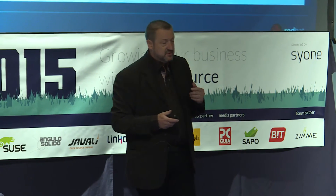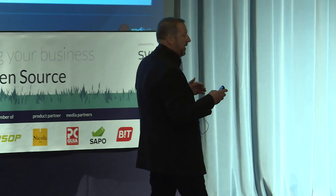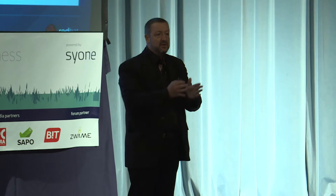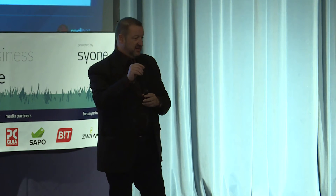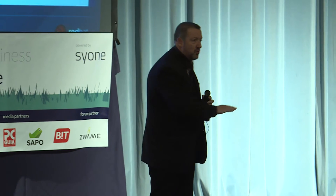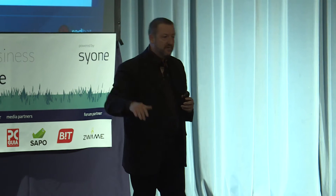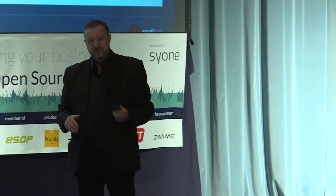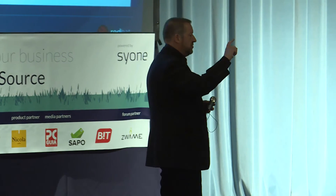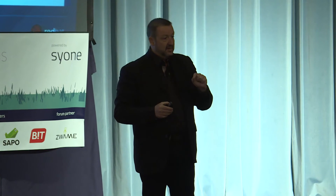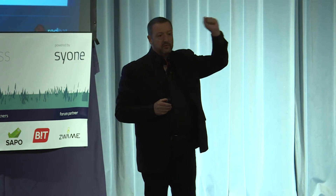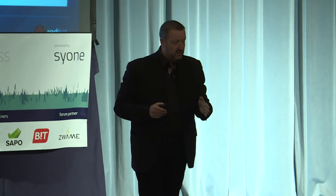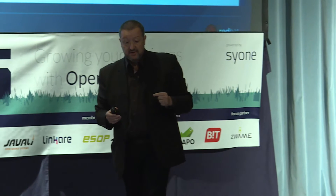This is what we call feature teams. In Mode One, development was horizontal: a network guy, a storage guy, a database guy, a middleware guy, an app server guy, a GUI guy — all interacting. Web giants develop vertically: you take a feature and give a small team full responsibility to develop it from A to Z — from the database level up to the graphical user interface.